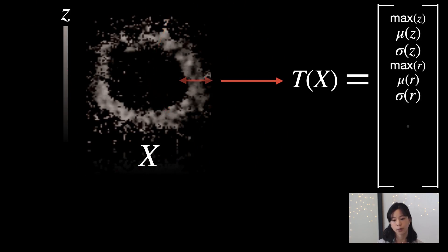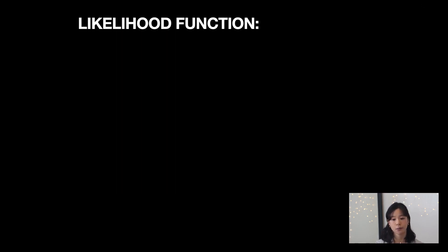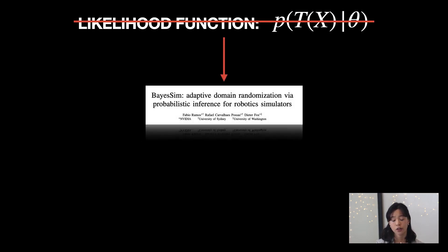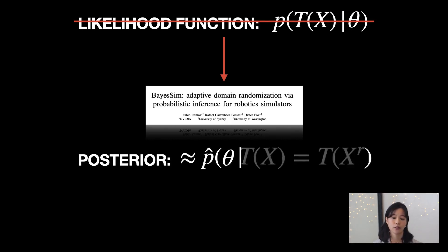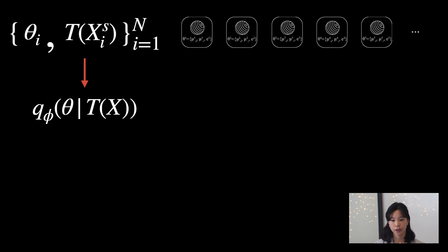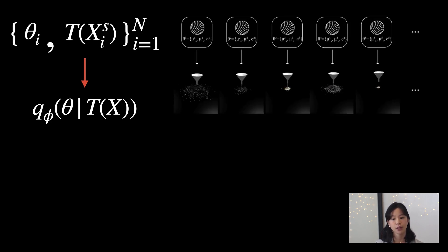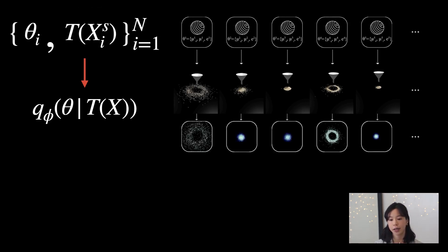Now, the likelihood function that we're interested in computing, or the conditional density of observed summary statistics given material parameters, is often intractable to evaluate. So we therefore chose to use a likelihood-free inference approach, or Bayes-Sim, to approximate the posterior of parameters given real observations. More specifically, Bayes-Sim directly learns a conditional density function by learning from pairs of parameters and summary statistics. These pairs are generated by independently sampling parameters from a predefined prior distribution, and then forward simulating each sample. Summary statistics are then extracted from the forward simulations.